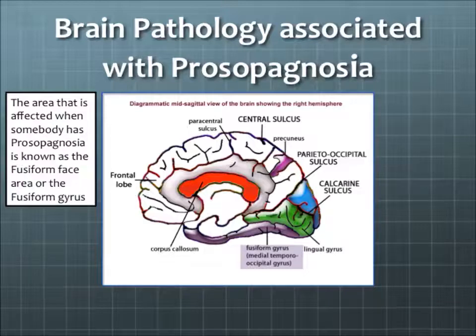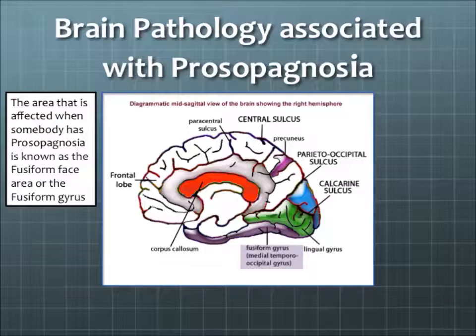For example, if the part that is responsible for recognizing that a red, circular, bouncy thing is a ball is damaged, then the patient will have object agnosia.